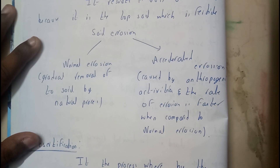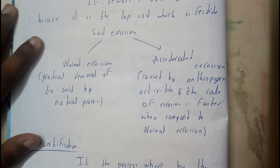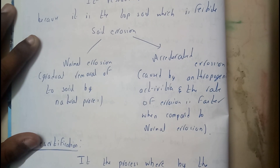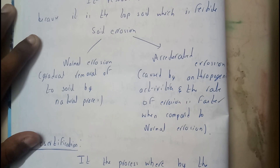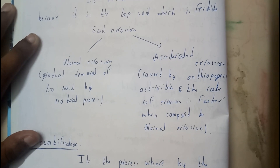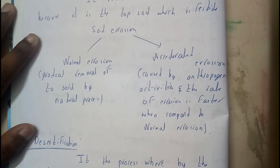Soil erosion is further divided into two types: one is normal and another one is accelerated. Normal is a natural process, which is a very slowly occurring process. Accelerated is due to human activity, and this type is very much faster when compared to normal. I hope everyone is now clear with land resources and soil erosion.